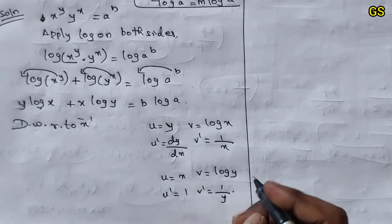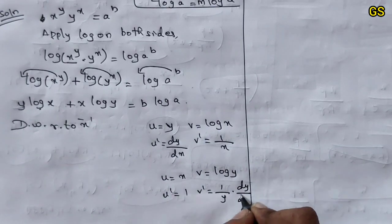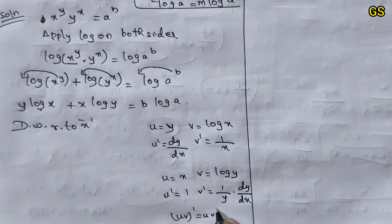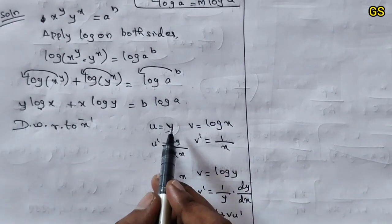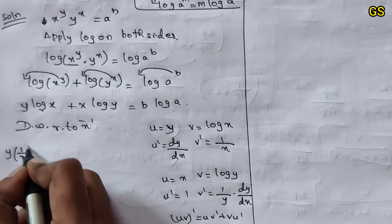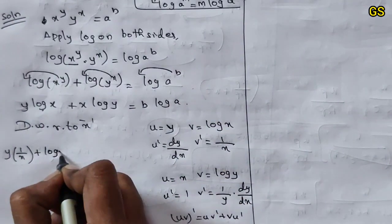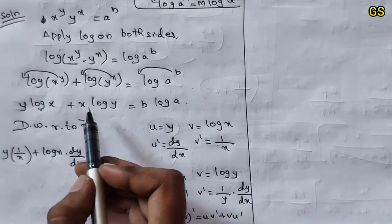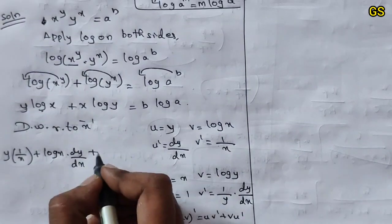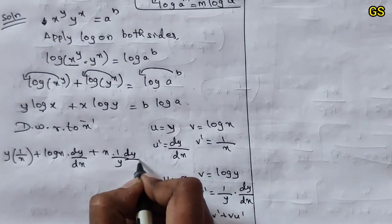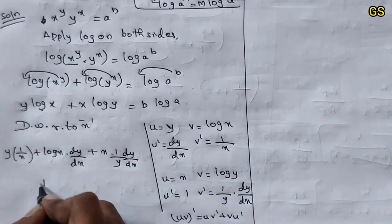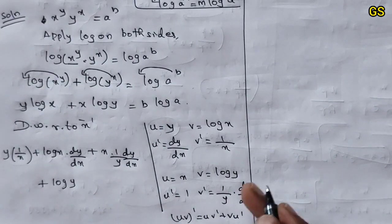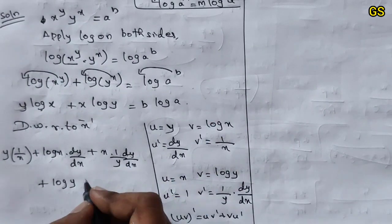Product rule formula: (uv)' = u v dash plus v u dash. First term: u into v dash = y into 1/x. Plus v into u dash = log x into dy/dx. Second term: x into 1/y dy/dx. Plus log y into 1.